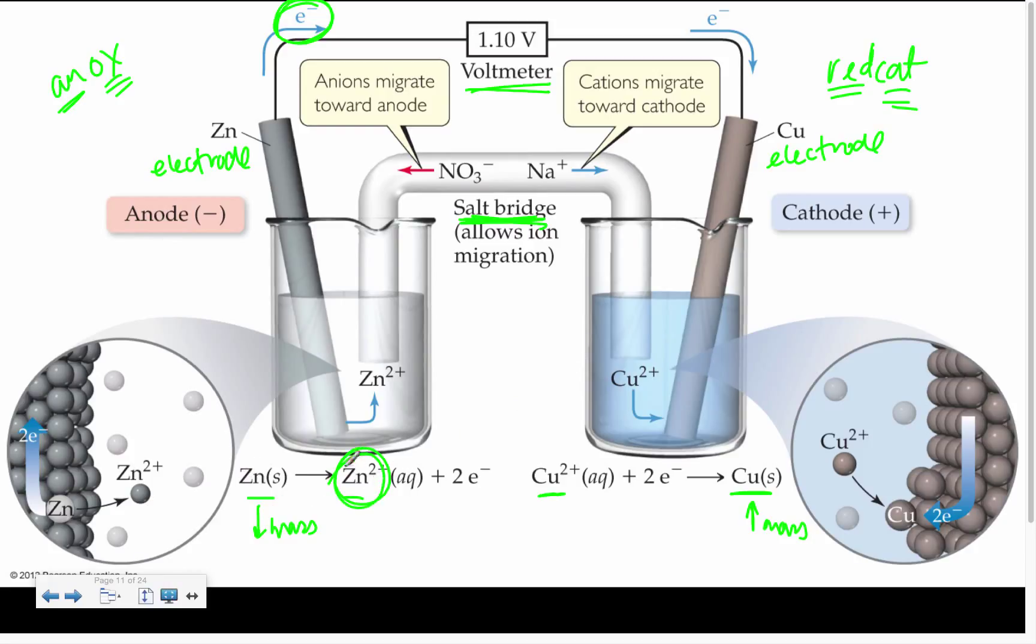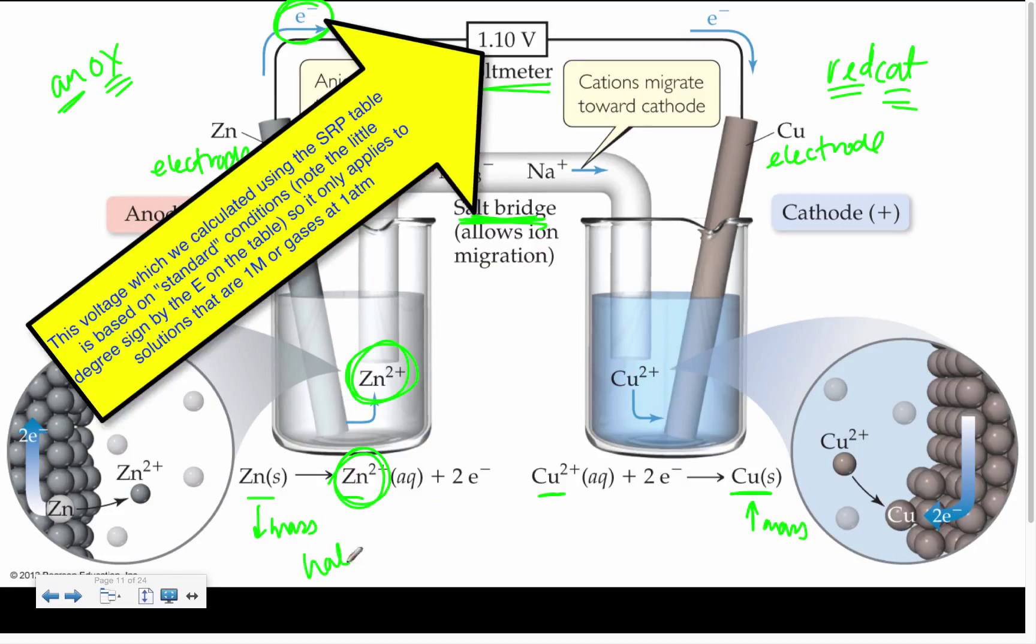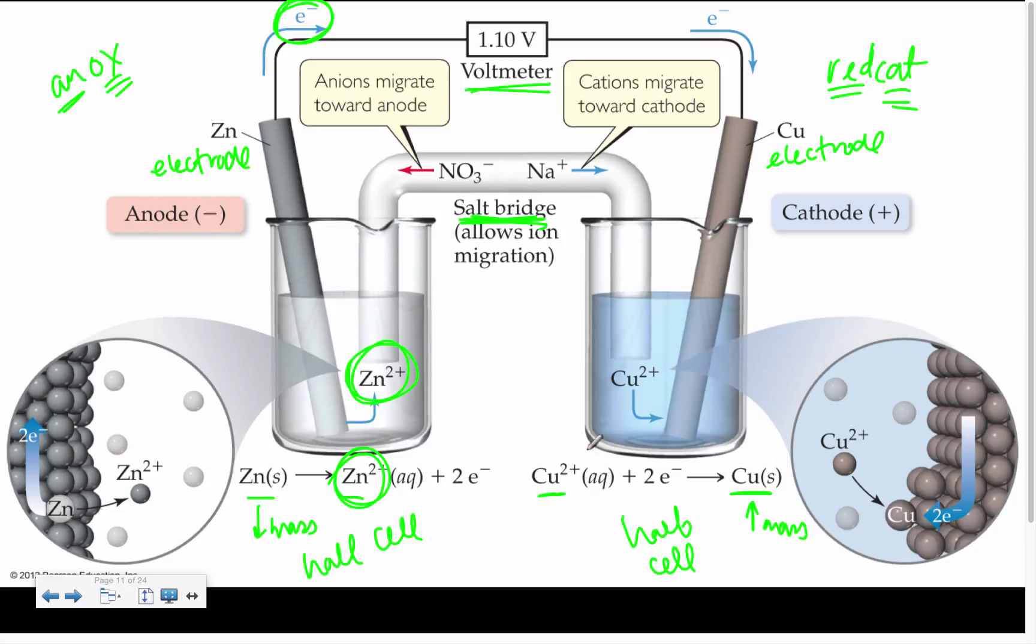Over here, we are producing cations. If we're producing cations, we're going to send anions through the salt bridge. Here we are depleting our cations, so we're going to send cations through the salt bridge. Again, the whole point being that we maintain electrical neutrality in each half cell. And each of these would be referred to as a half cell. Kind of like we talked about the half reactions, those half reactions sort of become our half cells.